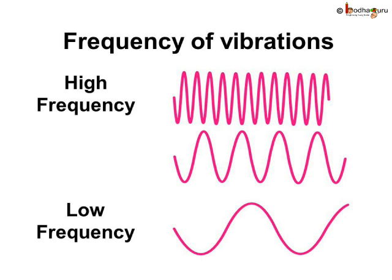Say, if an object oscillates 25 times in 1 second, what would be its frequency? Yes, it will be 25 hertz. So, if the frequency increases, it means more vibrations or oscillations in a given time. Frequency is also defined as the number of waves passing through a point in 1 second.